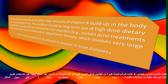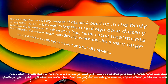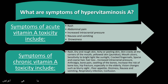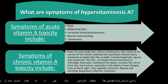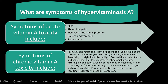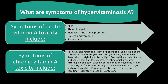Chronic vitamin A toxicity occurs when large amounts of vitamin A build up in the body over a long period of time. This condition is caused by long-term use of high-dose dietary supplements, possibly due to treatment for skin disorders — for example, certain acne treatments that contain high doses of vitamin A — or megavitamin therapy, which involves very large doses of certain vitamins in an attempt to prevent or treat diseases. Symptoms of acute vitamin A toxicity include rash, abdominal pain, increased intracranial pressure, nausea and vomiting, and drowsiness.